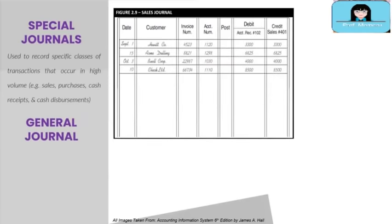If you have sales that are cash instead of credit, they will be recorded in another special journal called the cash receipts journal. Normally there are no journal entries written out in special journals; the totals of each ledger account on the sales journal or other special journals are calculated and then posted directly to the general ledgers.